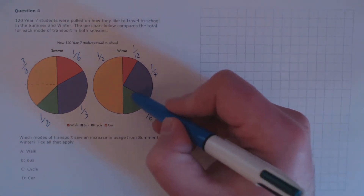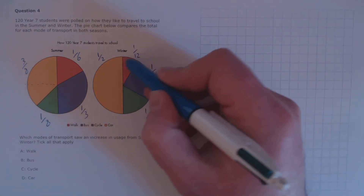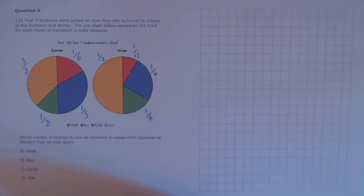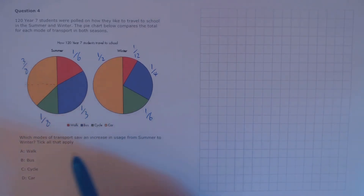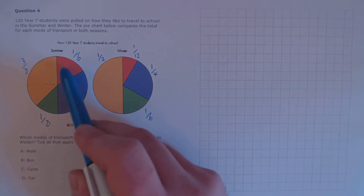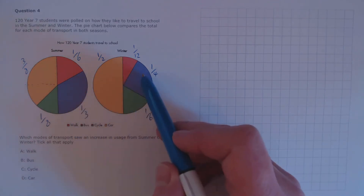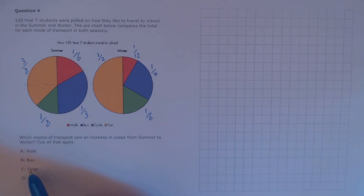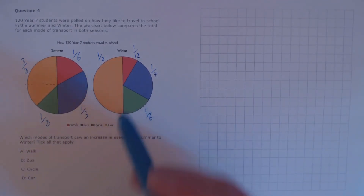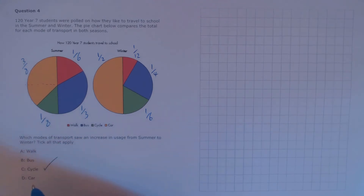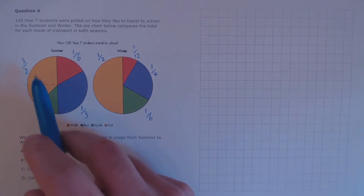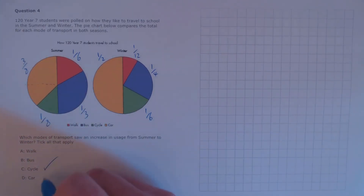We can find that by comparing it to a sixth — it's a half of a sixth. Now we just need to see which mode of transport increased from summer to winter. Walking went from a sixth to a twelfth — that's a decrease. Bus went from a third to a quarter — that's a decrease. Cycling went from an eighth to a sixth — which is an increase. And going by car went from 3/8 to a half — which is an increase.